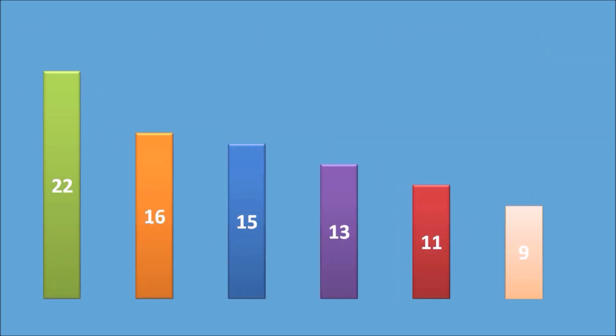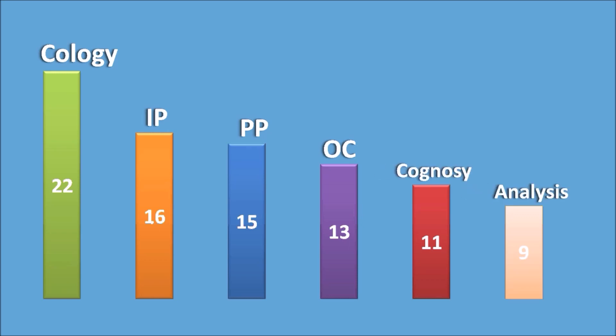Looking at the GPAT 2018 question distribution: Pharmacology had 22 questions, Industrial Pharmacy 16 questions, Physical Pharmacy 15 questions — meaning Physical Pharmacy was given more weightage in 2018. Organic Chemistry had 13 questions, Cognacy 11 questions, and Pharmaceutical Analysis 9 questions. These six subjects together account for 86 questions.